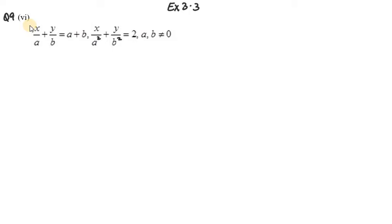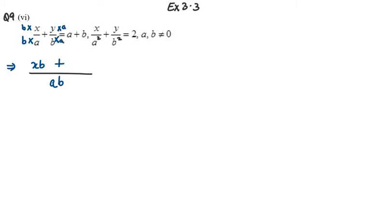Let's solve question six. Here we are given A and B as the denominators, so it is very clear that since it is a fraction, we need to take the LCM. For equation 1, we have A and B as denominators, so we need to take AB as their LCM. For the first term we multiply by B to get XB, and the second term we multiply by A to get YA, giving us XB plus YA equals A plus B.